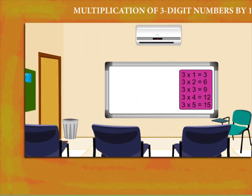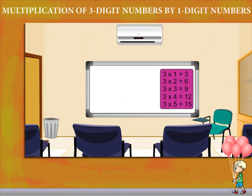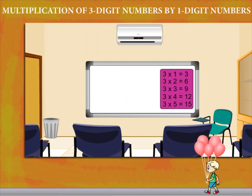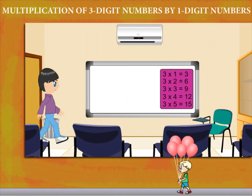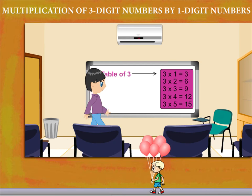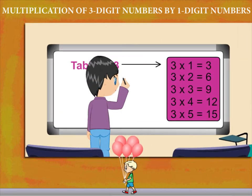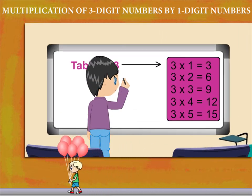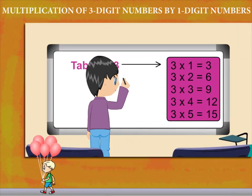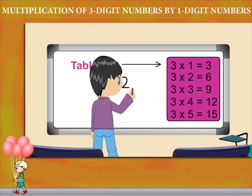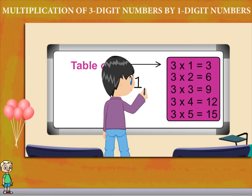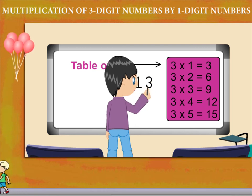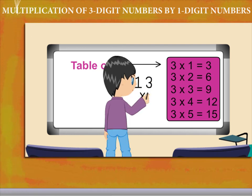Multiplication of 3-digit numbers by 1-digit number. Here is the table of 3, and in comes Boni to multiply 213 by 3 on the board.